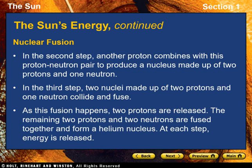In the second step, another proton combines with this proton-neutron pair to produce a nucleus made up of two protons and one neutron. In the third step, two nuclei — each made up of two protons and one neutron — collide and fuse. As this fusion happens, two protons are released. The remaining two protons and two neutrons fuse together and form a helium nucleus. During each step of the reaction, energy is released.